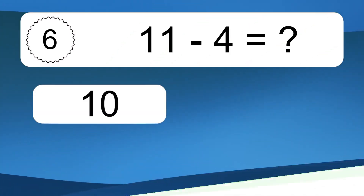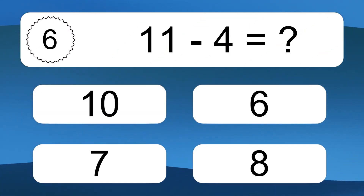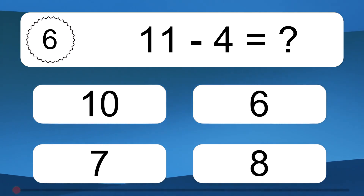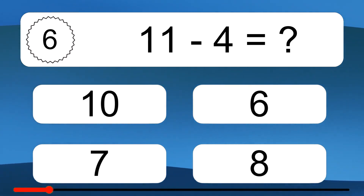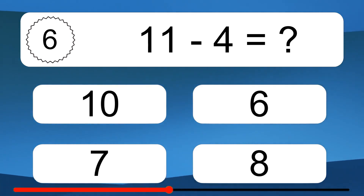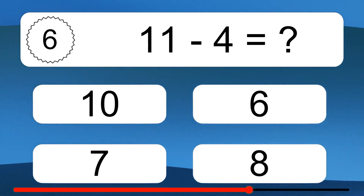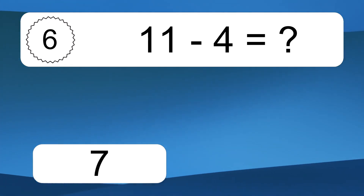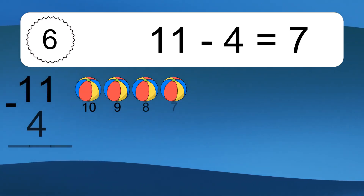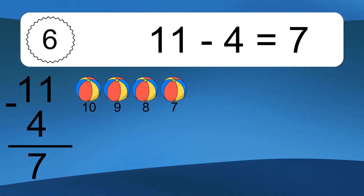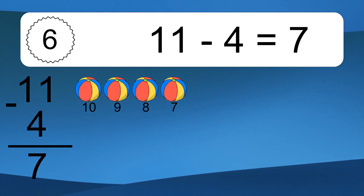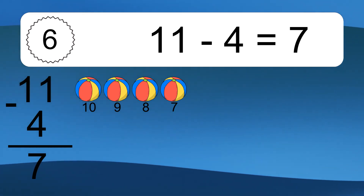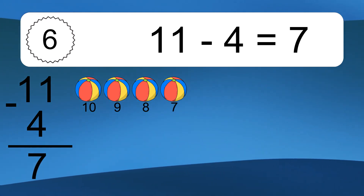11 minus 4 equals what? 11 minus 4 equals 7. Let's count it: 10, 9, 8, 7.